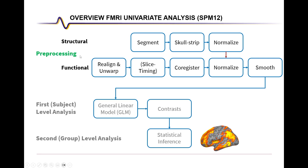Today we will start with pre-processing, which involves pre-processing of both structural and functional images. We use the structural anatomical image of the subject to have high anatomical resolution, to then normalize our functional images via the structural images. Structural pre-processing typically involves segmentation into different tissue types, then skull stripping to end up with an image of the brain, and finally normalizing into standard MNI space.